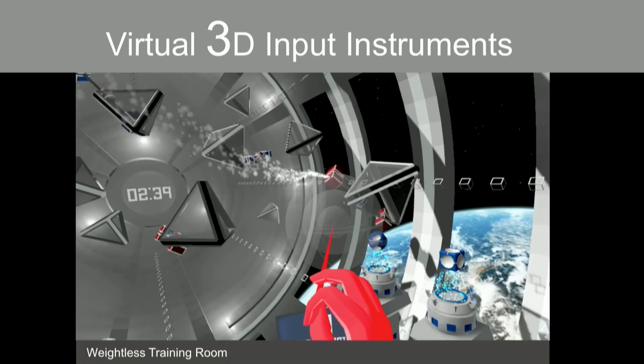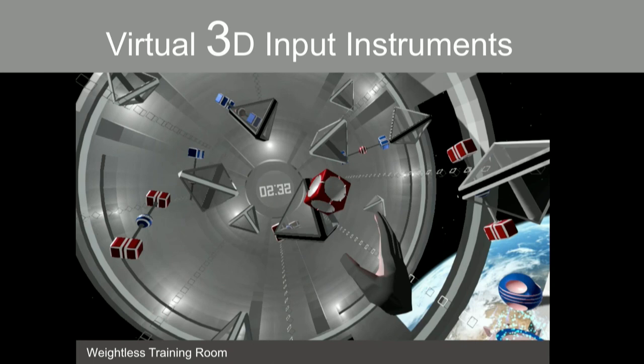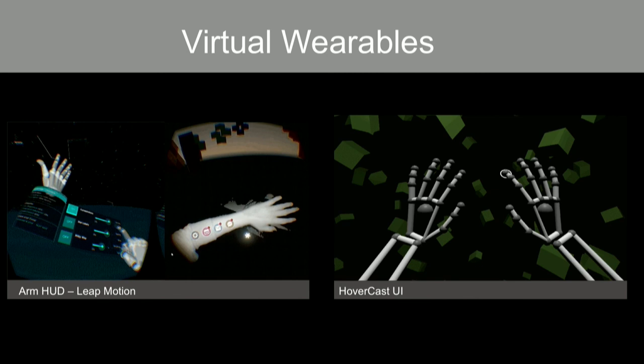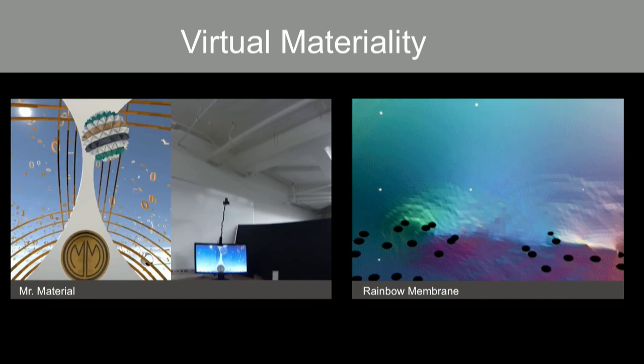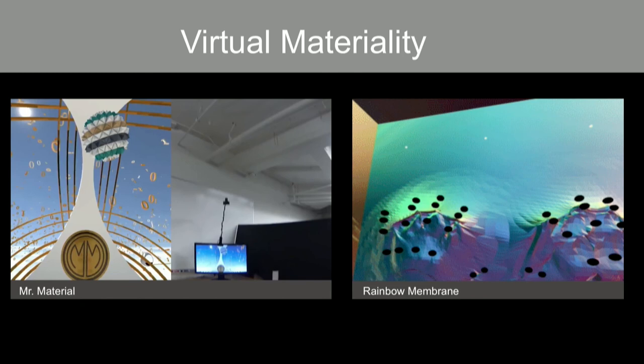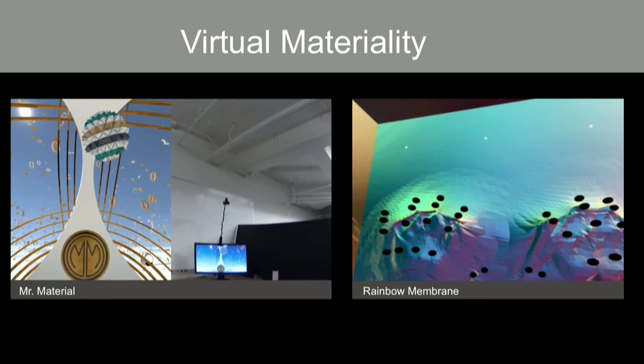And the very last one, oh second last one, virtual wearables, attaching things to the body so that you can have interfaces which pop up when you need them and go away when you don't. And the last one is virtual materials where walls can be made of liquid metal or react to your hands in ways that we could never have in the real world. Overall, I don't know how these things are going to evolve, but that's what I find so exciting about it. I hope you got some of that excitement too. Thanks.